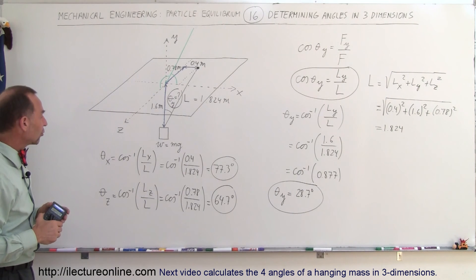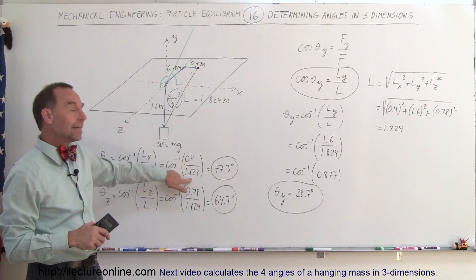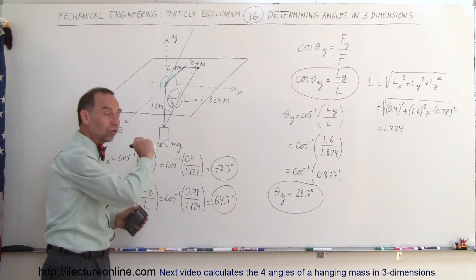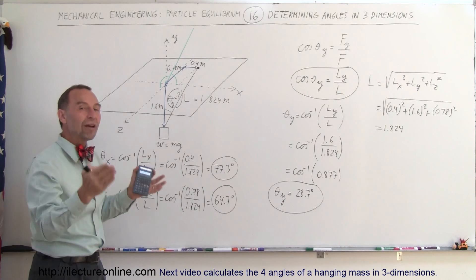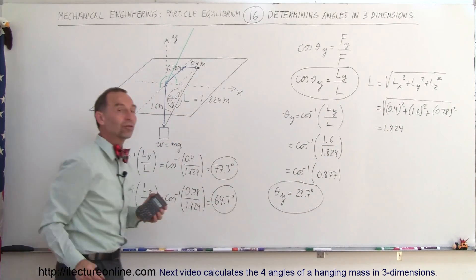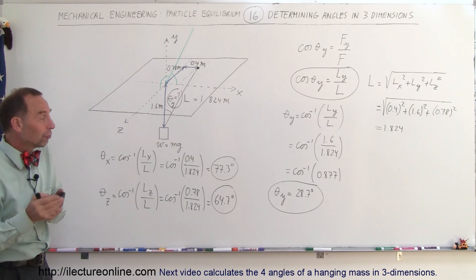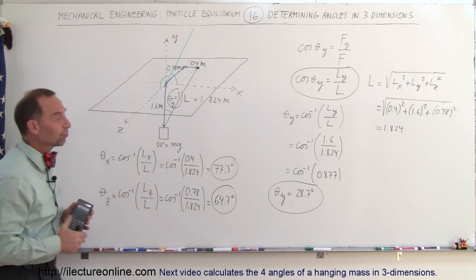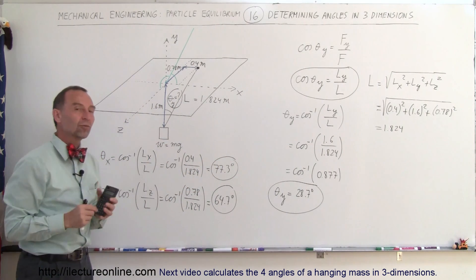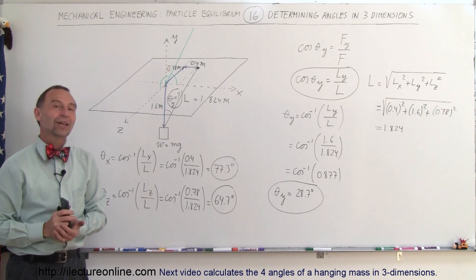Now take a look at the size of the direction cosine. The direction cosine is the ratio of the component divided by the length of the vector L. If that ratio is small, the direction cosine is small, meaning the vector is directed away from that axis — the bigger the angle, the smaller the direction cosine. The smaller the angle, the bigger the direction cosine. So the size of the direction cosine gives you a feel for the alignment of the vector with the axis in consideration: if the ratio is big, the vector is aligned closely to that axis; if the direction cosine is small, the vector is directed away from that axis. That's how we use direction cosines to find angles in three dimensions.